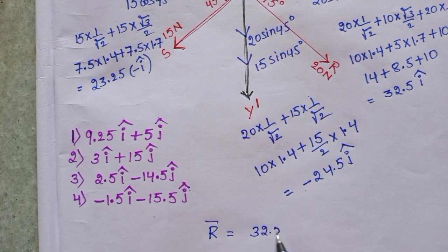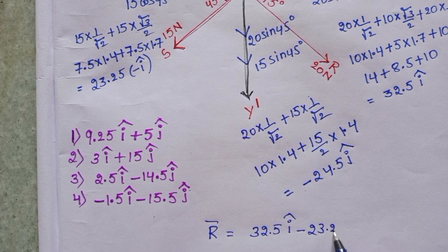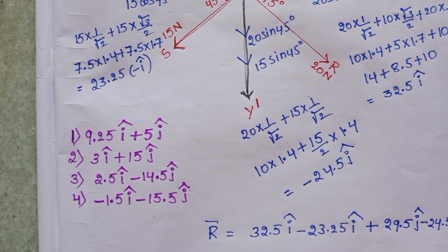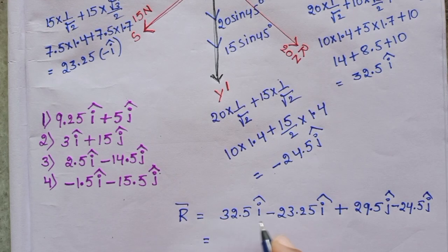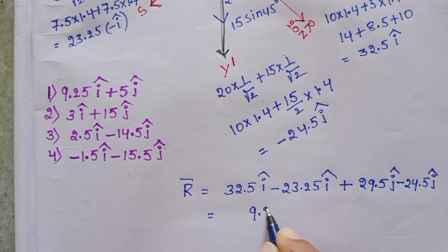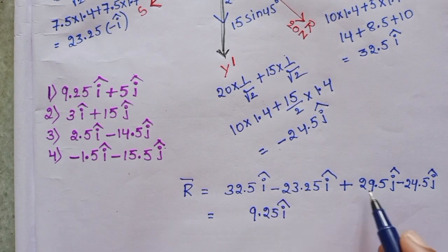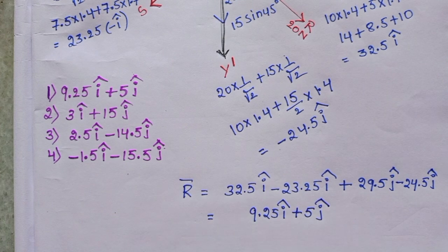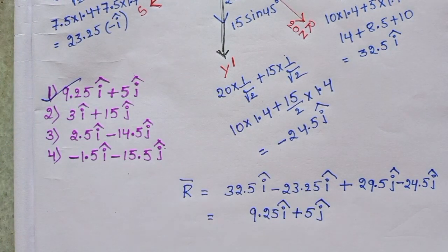So combining: 32.5 minus 23.5 gives 9.25 i-cap along x. And 29.5 minus 24.5 gives 5 j-cap along y. The resultant is approximately 9.25 i-cap plus 5 j-cap. So the correct answer is the first option.